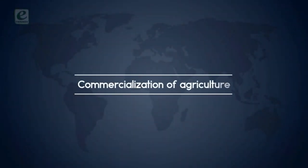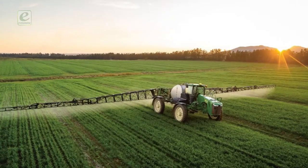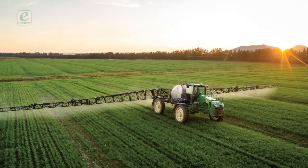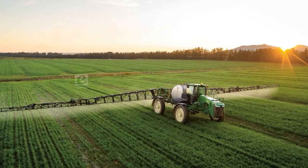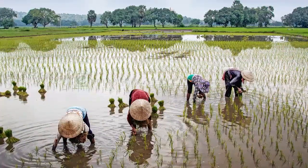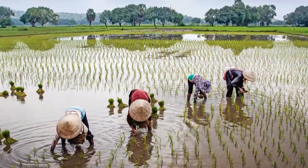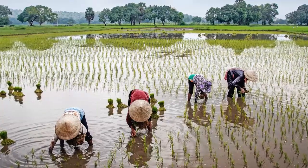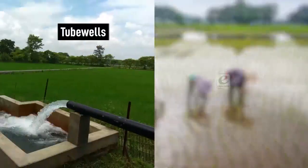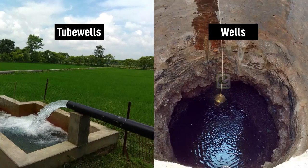Commercialization of agriculture: after the success of the Green Revolution, our farmers are producing commercial crops. These commercial crops need more water and other inputs. Assured means of irrigation like tube wells and wells are responsible for falling groundwater levels.